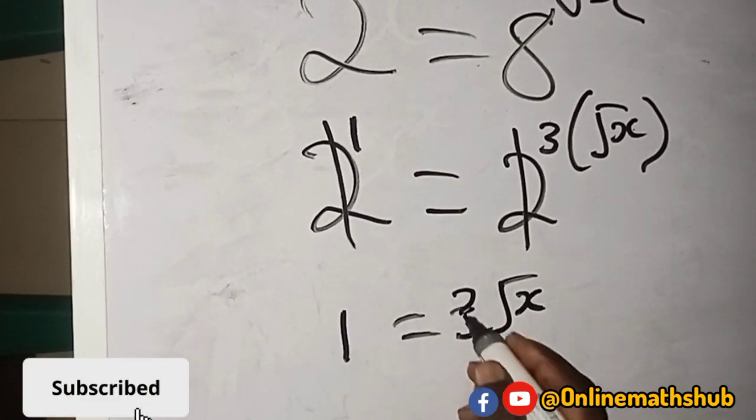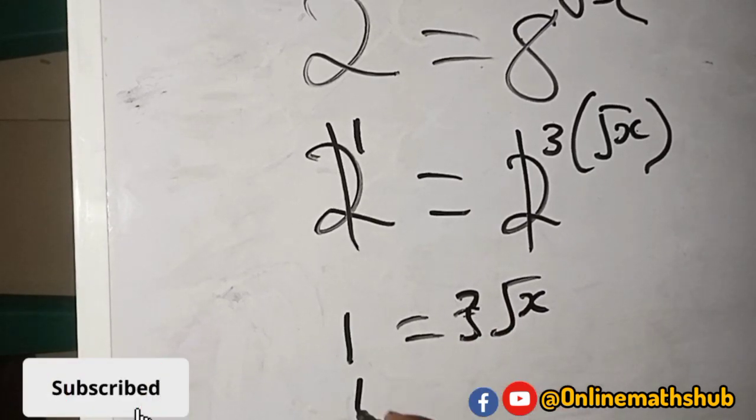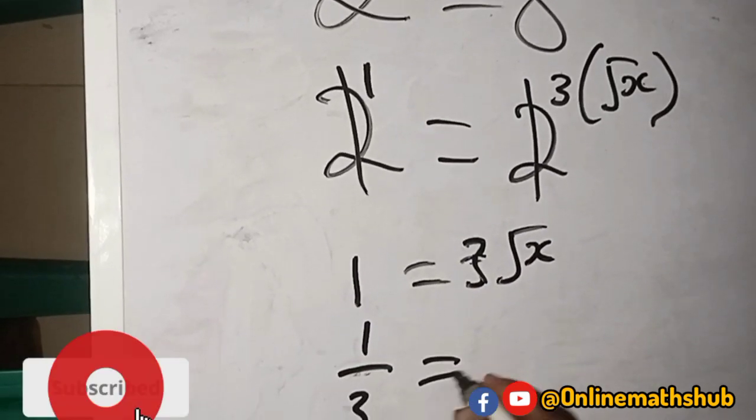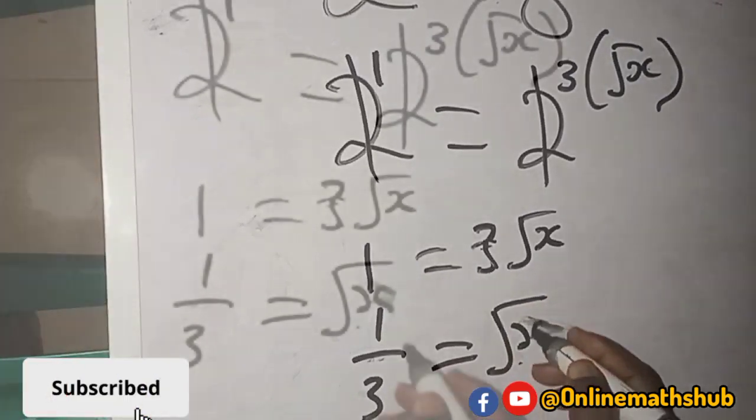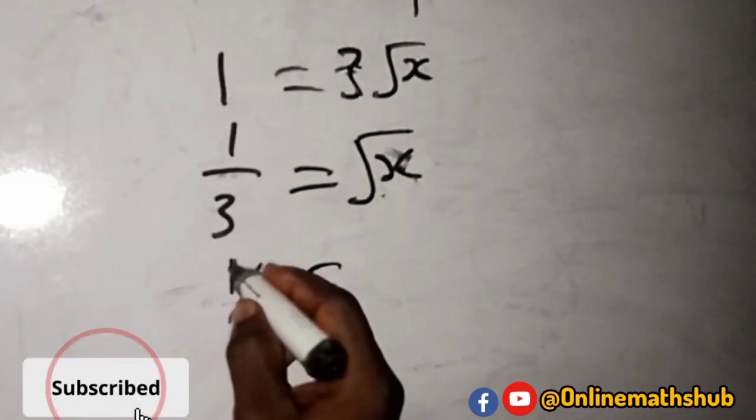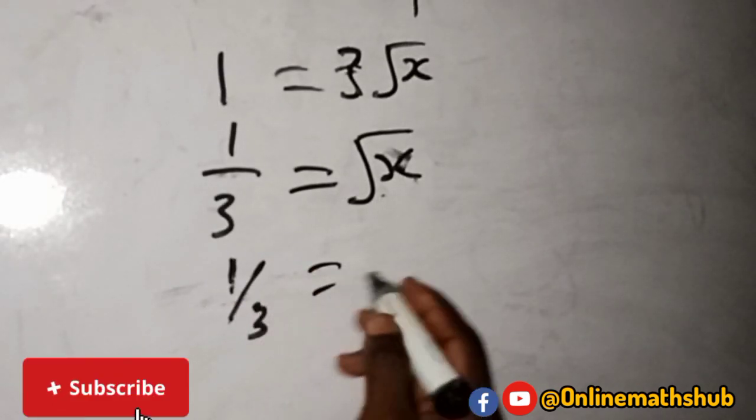I can divide both sides by 3, and if I do that I will have 1 over 3 is equal to root x. At this point, you can clearly see that 1 over 3 is